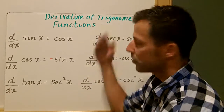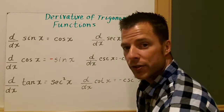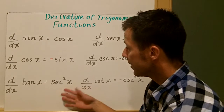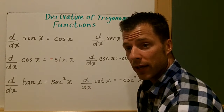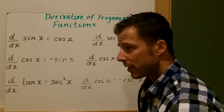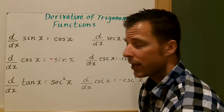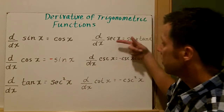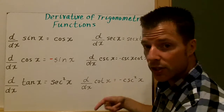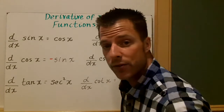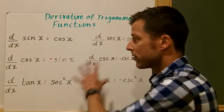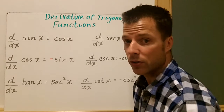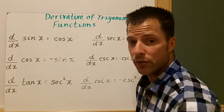Welcome to Derivatives of Trigonometric Functions. Before we begin, we have six trig functions that we're going to look at. If you think back to Algebra 2 and pre-calculus, we have sine, cosine, and tangent, secant, cosecant, and cotangent. We're going to have derivatives for each of these. On this first slide, I've given you all six rules that we're going to learn and apply.